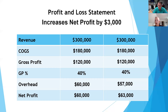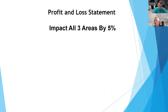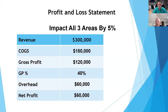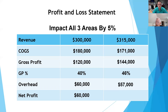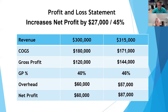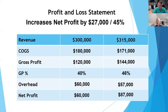Here's the exponential part. If you got a 5% increase in revenue, a 5% decrease in cost of goods sold, and a 5% decrease in overhead, that leads to a 45% increase in your profit — taking it from $60,000 to $87,000. That's $27,000 or 45%. Surely we can come up with a way to grow revenue 5%, lower variable costs 5%, and lower fixed costs 5%. Those three tweaks lead to a 45% increase in profits.